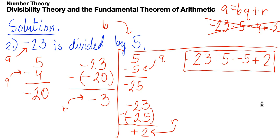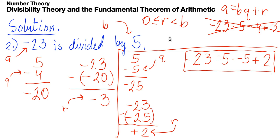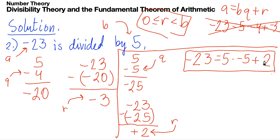Just to clarify: we cannot use r equals negative 3 because our restriction for r is that r must be greater than or equal to 0 and less than b. That's why the remainder cannot be negative. So our answer for number two is: negative 23 equals 5 times negative 5 plus 2.